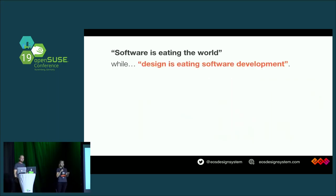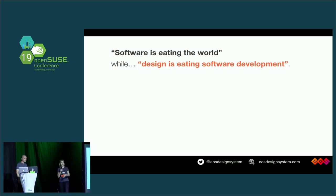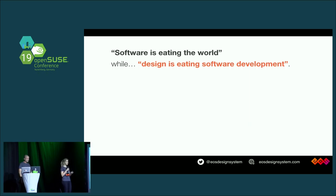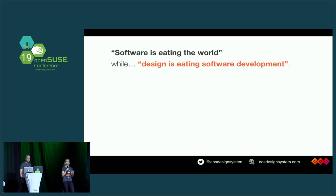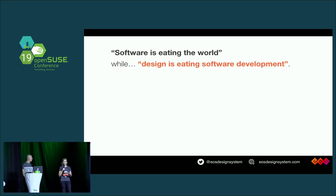Something else is happening right now: design is eating software development. At the same time, other revolutions are happening as well — virtual reality and augmented reality are also eating software development. There's a lot of things disrupting the way we do software today, but today we're going to focus on design. A lot of companies in the industry realized that in order to make better software, we have to provide better experiences. Design and UX experience is what helps us deliver good quality products to our consumers.